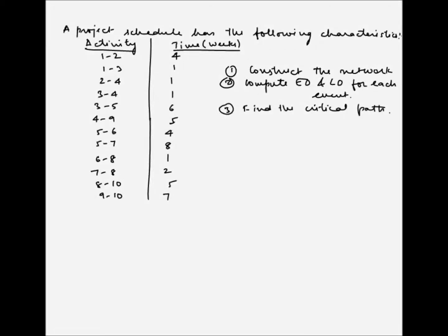In this example we have been given the list of activities which make up the project network and we have also been given the time for each of the activities to complete. The precedence relationship is given in the form of the activity description. So 1-2 means 1 is representing a node and 2 is also representing a node, and 1-2 means 1 precedes 2. Similarly, 1-3 means 1 precedes event number 3, and 2-4 means 2 precedes event number 4. So we have been given the activities, their duration, as well as the precedence relationship.